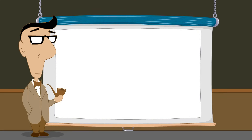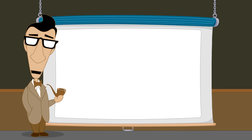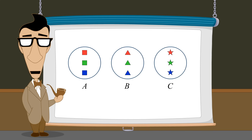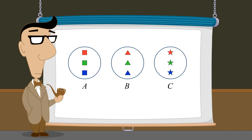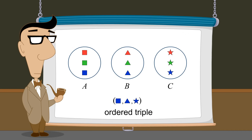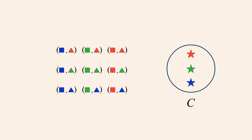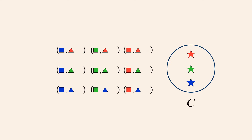Cartesian products can also be formed from more than two operand sets. For example, we can form the Cartesian product of three sets A, B, and C by repeatedly selecting one element from each set to form ordered triples. To create every possible ordered triple from three sets, we can start by forming the Cartesian product of sets A and B as we did before, and then choose one element from set C as a third element of the ordered triple.